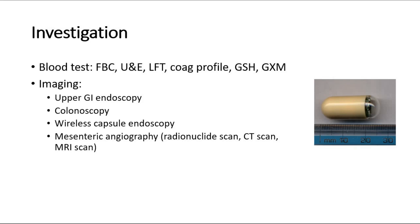In patients presenting with symptoms of GI bleeding, exclude any malignancy. Patients with occult angiodysplasia will likely receive an upper GI endoscopy or colonoscopy, depending on the suspected site of bleeding. Wireless capsule endoscopy, shown in this picture, is the preferred method to detect bleeding from the small bowel.